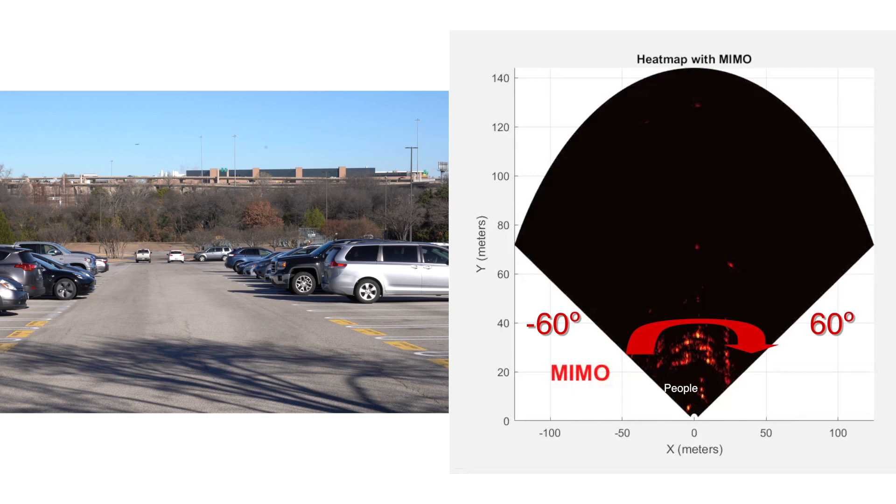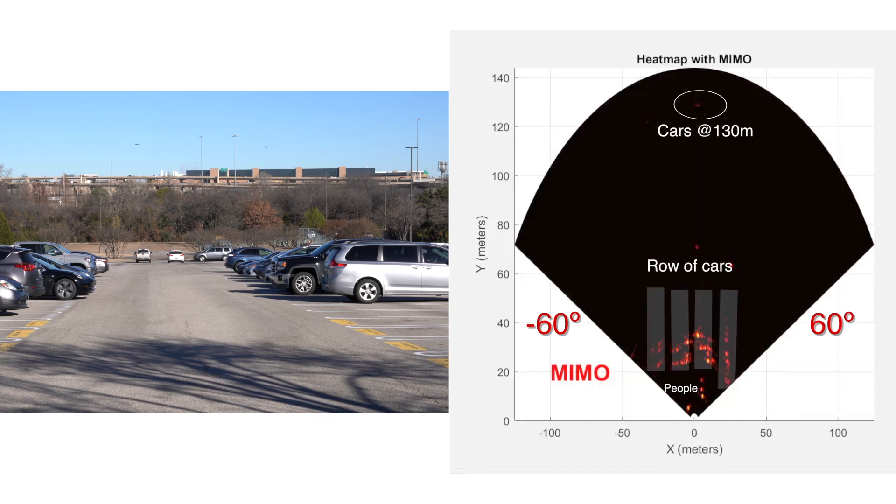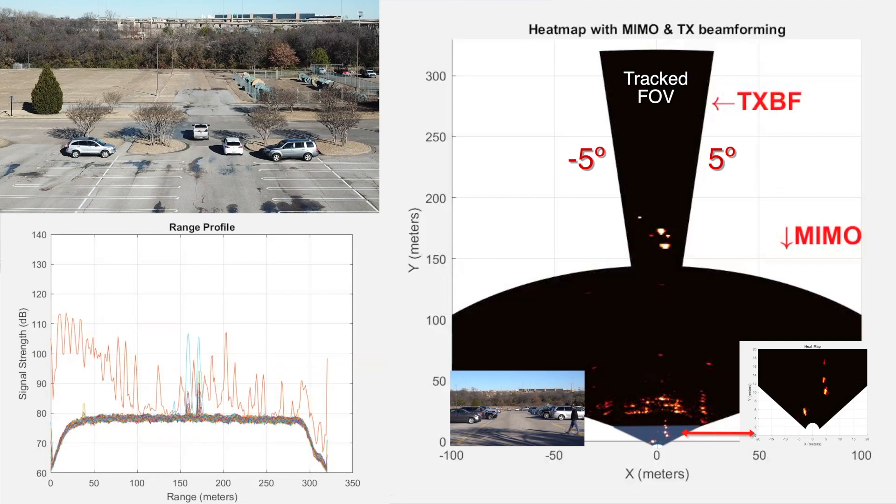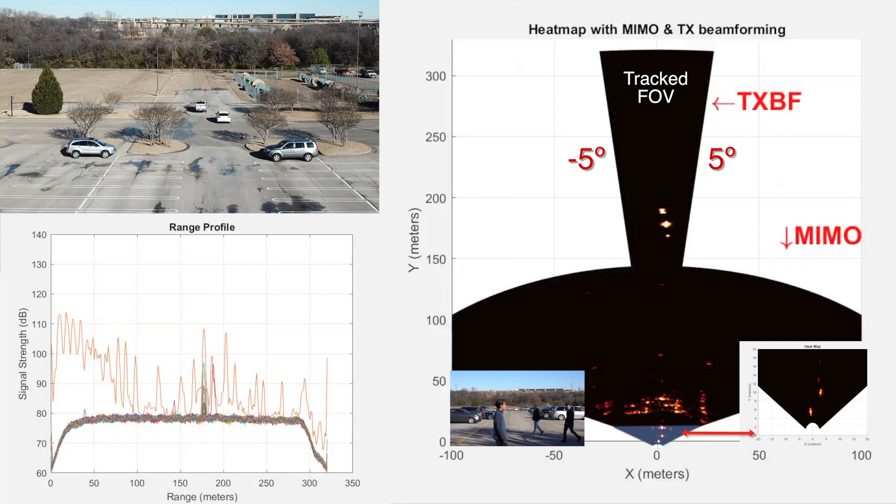Meanwhile, the MIMO covers 120-degree field of view and 130 meters of range to cover wide field of view and immediate range. Then TX beamforming focuses on the target cars by steering the beam to cover 10-degree field of view around the target cars.